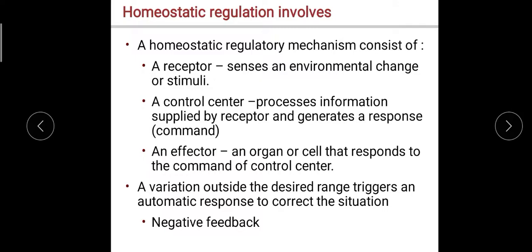Homeostatic regulation involves three components. First, a receptor — it senses an environmental change or stimuli. The receptor receives information or perceives changes from the environment. Stimuli are something that causes a reaction or change. Second is the control center, which processes information supplied by the receptor and generates a response.